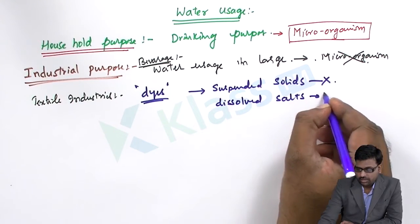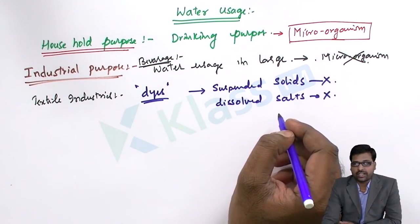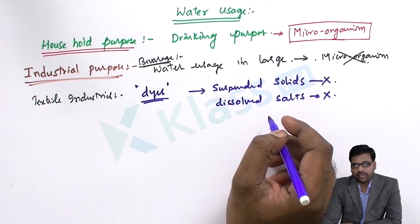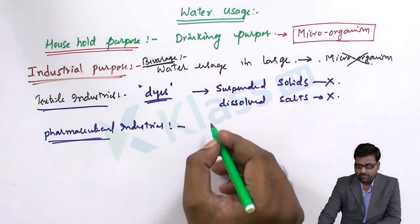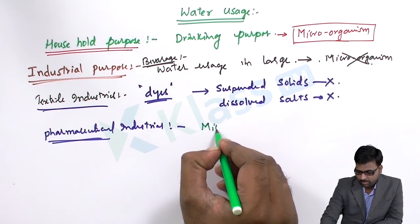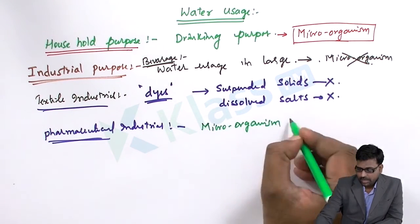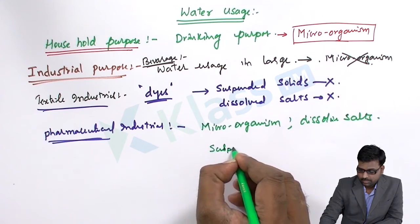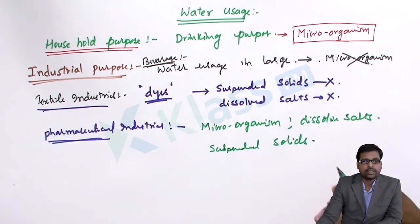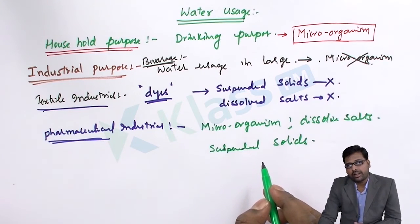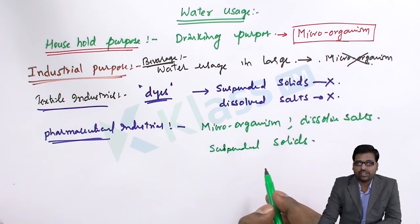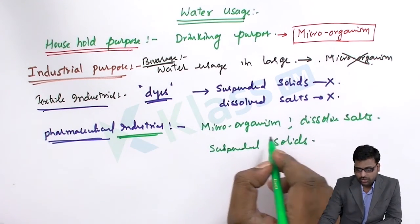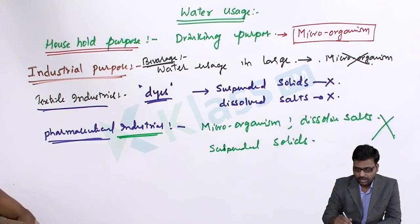If dissolved salts are present in water used in the textile industry, they may interact with the dyes and may not give the definite color required. In the pharmaceutical industry, the water used should also not contain microorganisms, dissolved salts, or suspended solids, because the presence of these salts may interfere with the chemical reactions that lead to drug formation.